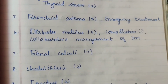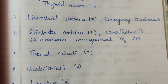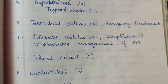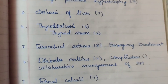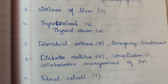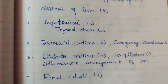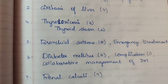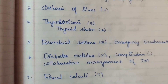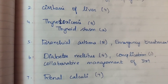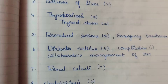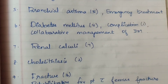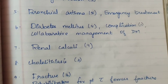Next is bronchial asthma, five times — emergency treatment is 5 marks. Thyrotoxicosis and thyroid storm are another name for each other, which can be confusing. Sixth one is diabetes mellitus, four times. Complications of diabetes mellitus is one of the 5 mark questions.